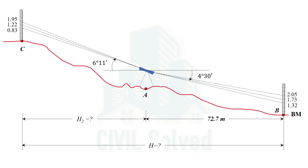Now we have both H1 and H2. Adding them together, we get the total horizontal distance between point B and point C as 183.55 m.